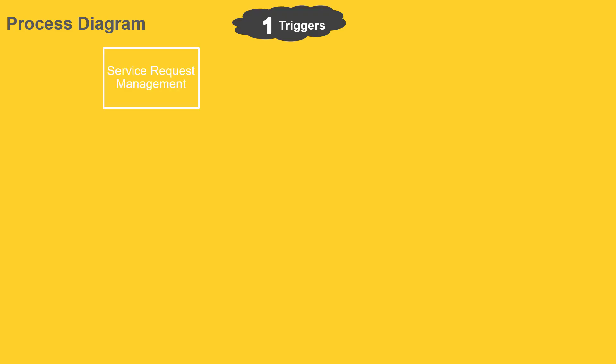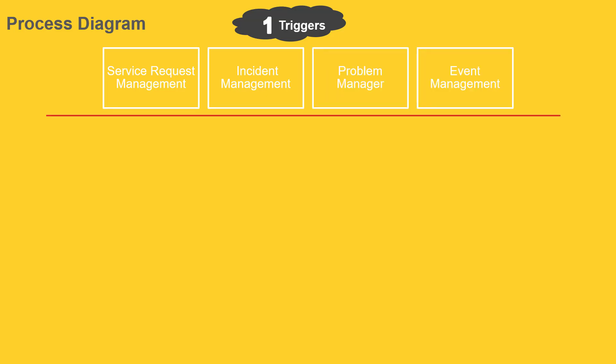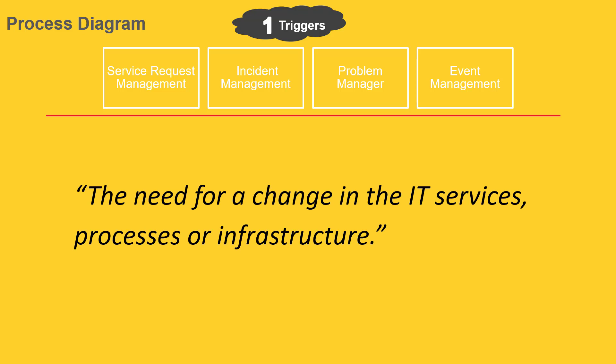Given that the change management process interfaces with so many other processes, its starting point or trigger can vary from service request management, incident management, problem management, event management, and many others. What do they all have in common? The need for a change in the IT services, processes, or infrastructure. Here is a good tip: to make his job easier, the change manager should always ask himself the 7 R's.